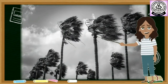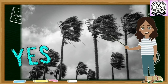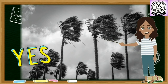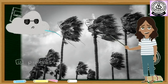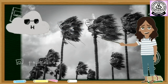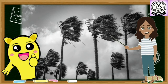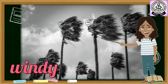Now, look at the picture and tell me, what do you see in this picture? Why are the trees, branches, and leaves bent? Yes, because the wind is blowing fast and harder. So, how is the weather? Very good. Windy.